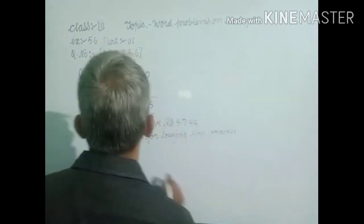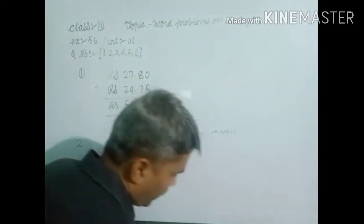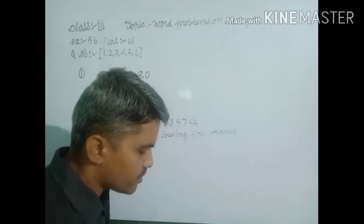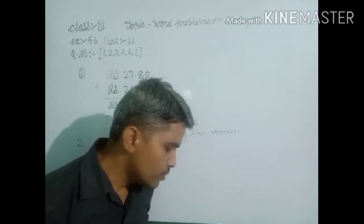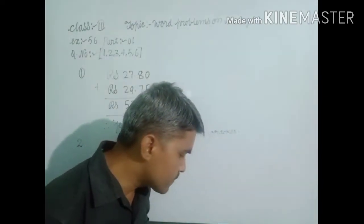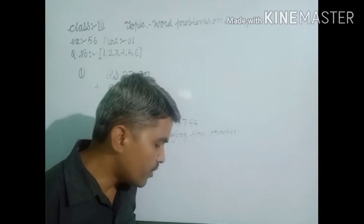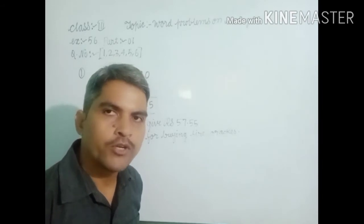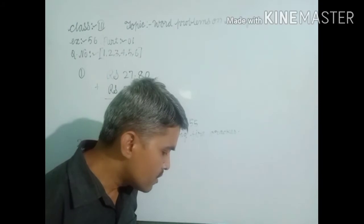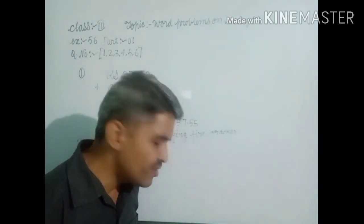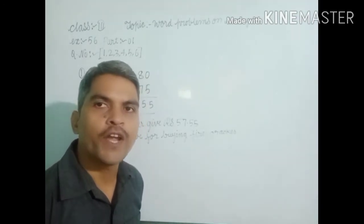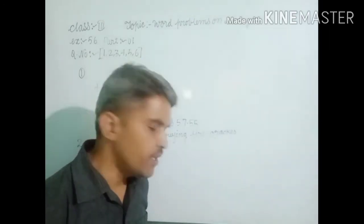In second question, a housewife purchased potatoes for Rs. 3.75, tomatoes Rs. 4.20, and onion. How much amount did she spend? When you add cost of potatoes, cost of tomatoes, cost of onion, then you find out total amount spent by housewife.